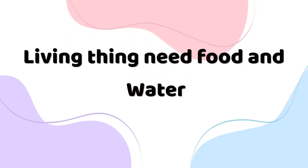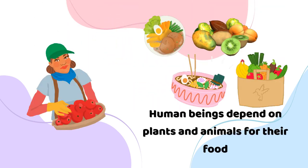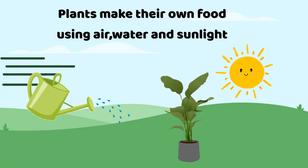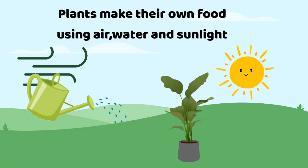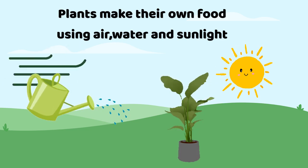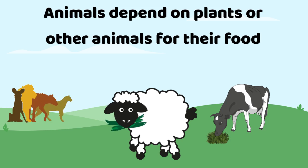Living beings need food and water. Human beings depend upon plants and animals for their food. Plants make their own food using water, air and sunlight. Animals depend upon plants or other animals for their food.